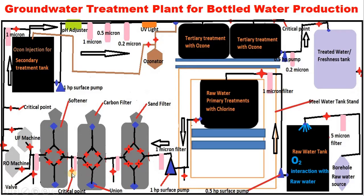This is critical point two. Collect water samples here and test for residual chlorine, pH, TDS, ORP, and alkalinity. After all parameters check out, the water is allowed to enter into the softener.